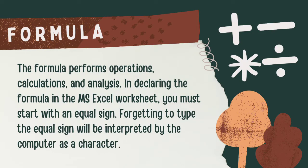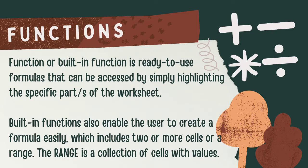A formula performs operations, calculations, and analysis. In declaring the formula in the MS Excel worksheet, you must start with an equal sign. Forgetting to type the equal sign will be interpreted by the computer as a character. A built-in function is a ready-to-use formula that can be accessed by simply highlighting a specific part of the worksheet, enabling the user to create a formula easily which includes two or more cells or a range. The range is a collection of cells with values.